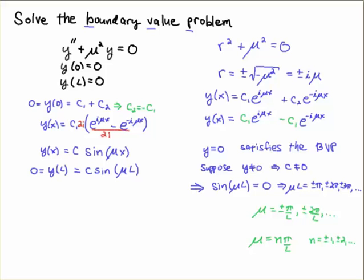And the possibilities then for mu are going to be plus or minus pi over L or plus or minus 2 pi over L and so on and so forth. In other words, I'll just let N be some integer other than 0 because we already covered the 0 case, and I get the solution to my ODE, my boundary value problem, looks like this.